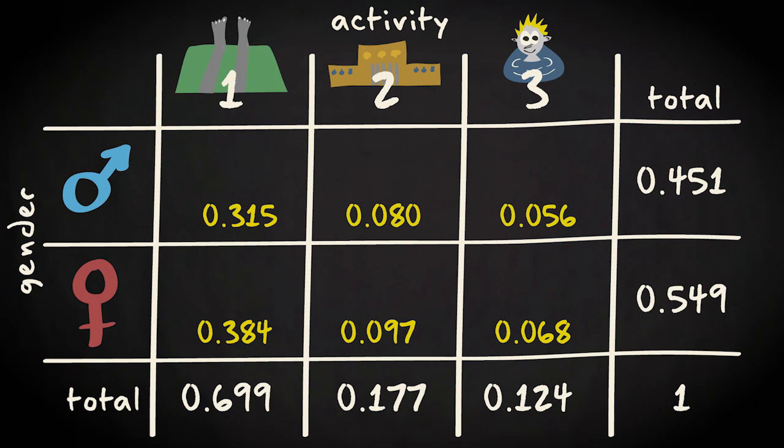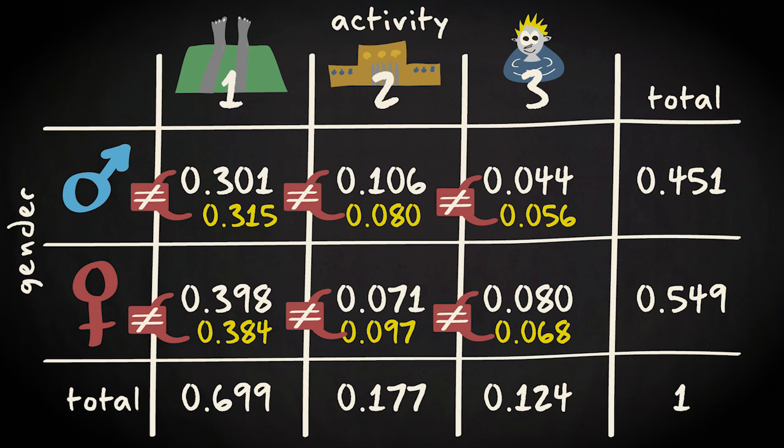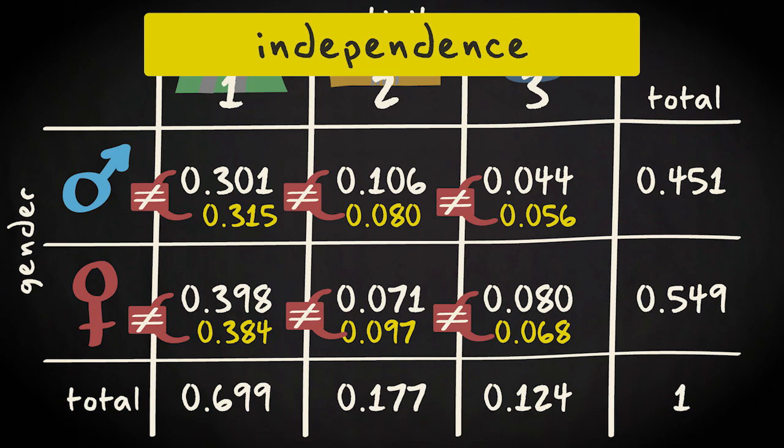However, we did observe joint probabilities that are quite different. Take a look. So, the assumption of independence seems not to hold.